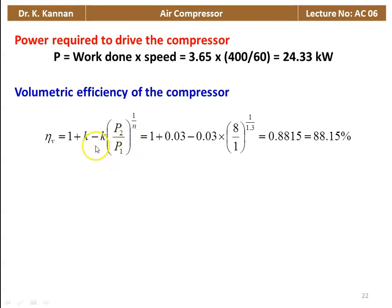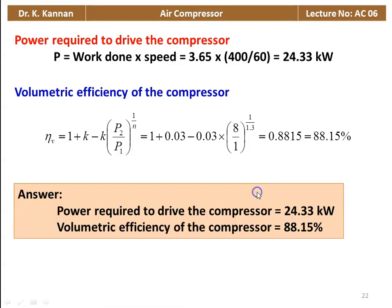Then volumetric efficiency: we calculate 1 plus K minus K into (P2 by P1) to the power 1 by n. So 1 plus 0.03 minus 0.03 into (8 by 1) to the power 1 by 1.3 equals 0.8815, which is 88.15%. The answer: power required is 24.33 kilowatts and volumetric efficiency is 88.15%.